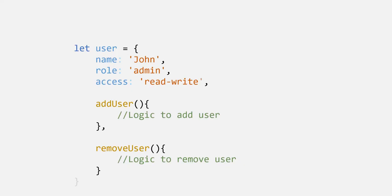For example, a user. A user can have a name, a role, type of access, and can also perform some tasks like adding a new user or removing an existing user. So here we are representing a real-world user as an object. An object can have data and behavior.